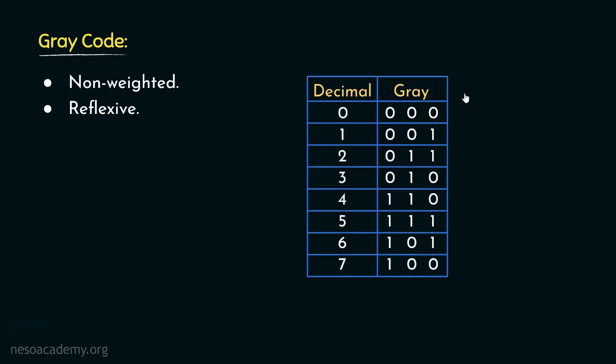With three bits we can derive eight different sequences, encoding decimal zero to seven in gray.